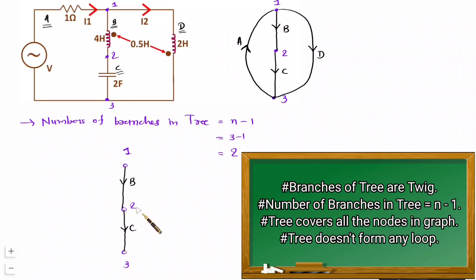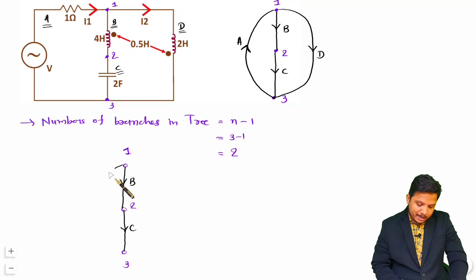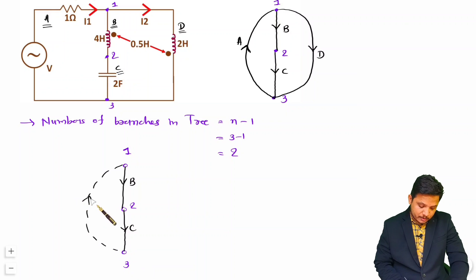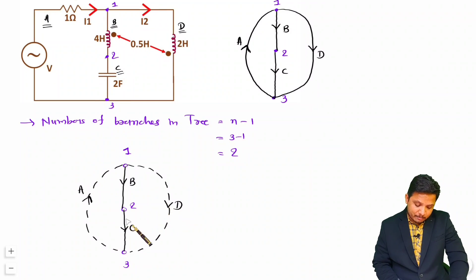These branches are the twigs of the given graph, as I am considering this as the tree. Branches A and D are not connected in this tree, so those are links. Whenever you draw links, show them with a dashed line. So branch A is a link, and branch D is also a link. This is my diagram based on the tree structure.